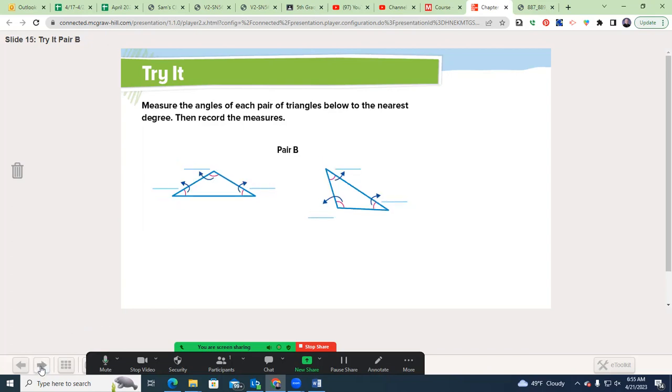Let's look at pair B. Do the same thing with the measurements. You may pause the video now. Welcome back. We have 120, 30, and 30, and 110, 40, and 30. When you see that there's one angle larger than 90 degrees, that is an obtuse triangle.